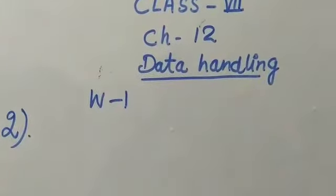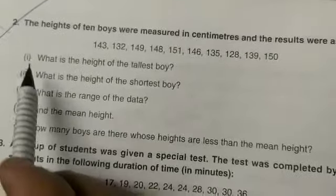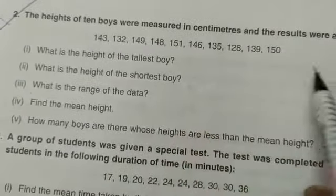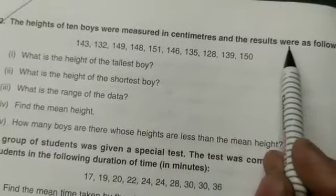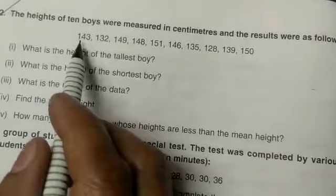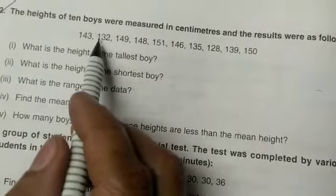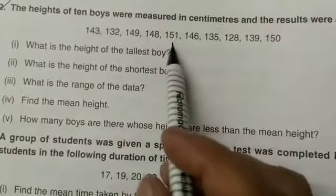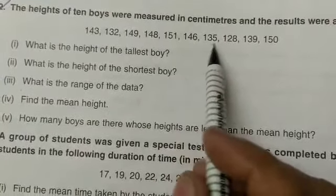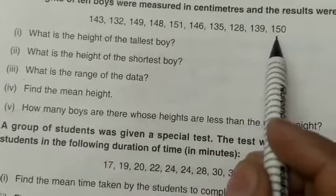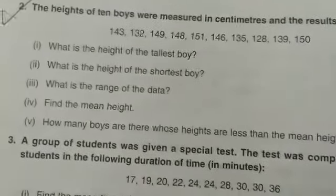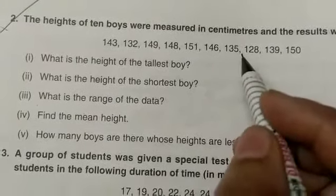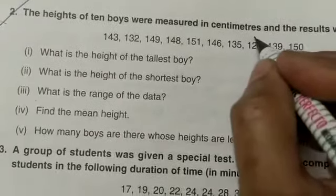Question number 2: The heights of 10 boys were measured in centimeters and the results were as follows: 143, 132, 149, 148, 151, 146, 135, 128, 139, and 150. First thing, you have to arrange it in ascending order.